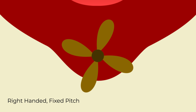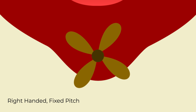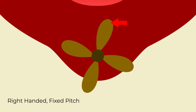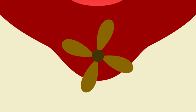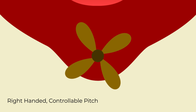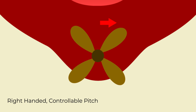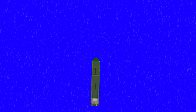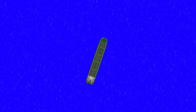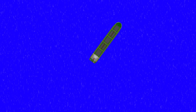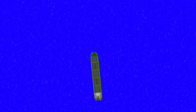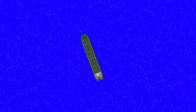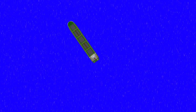So, a fixed pitch right hand propeller — which is spinning clockwise running ahead, or anti-clockwise running astern — is going to tend to walk your stern to the left. A controllable pitch right hand propeller is also spinning clockwise running ahead, but also clockwise running astern, so it's going to tend to walk your stern to the right. If your stern wants to walk to the left, your vessel naturally wants to turn to starboard, and vice versa. Whichever way your stern wants to turn, you need to take advantage of it when turning short round.